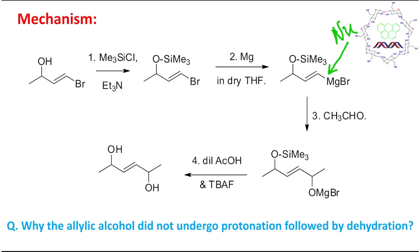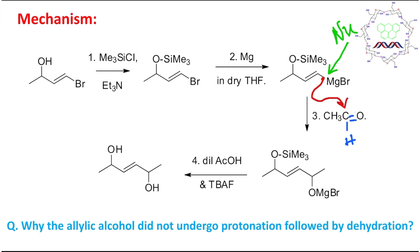The Grignard reagent can react with electrophiles like an aldehyde, because the aldehyde has a carbon-oxygen double bond that is electrophilic in nature. Both the electrophile and nucleophile react together, and ultimately produce a secondary alcohol, because reaction of a Grignard with any aldehyde apart from formaldehyde results in a secondary alcohol derivative after workup. The OMgBr intermediate is then converted into the corresponding allylic alcohol derivative.